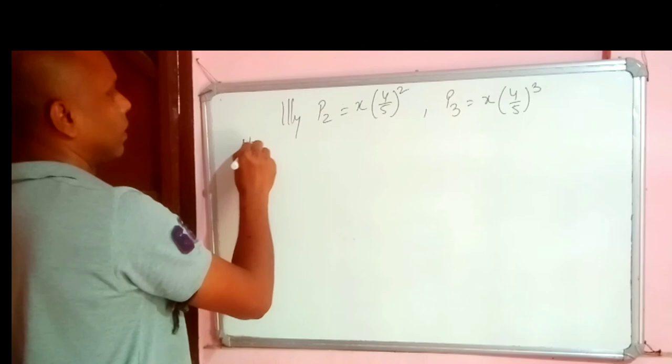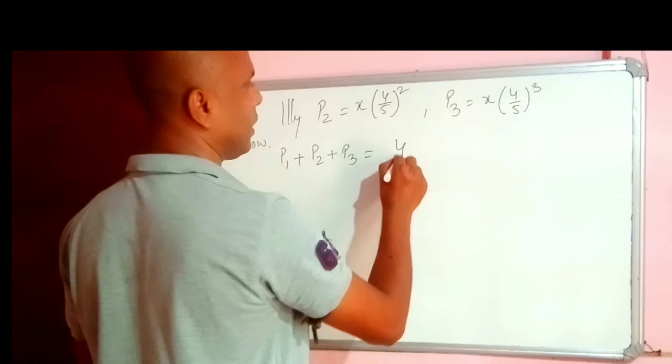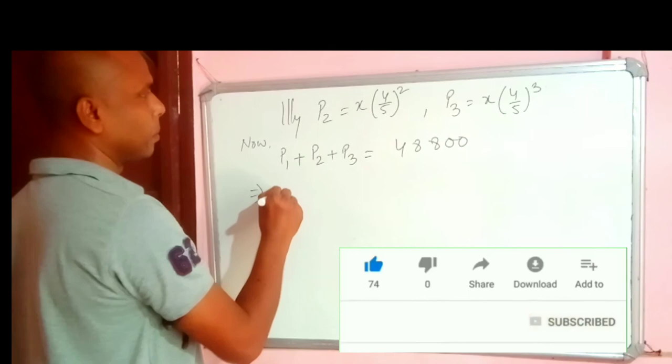Now, the sum of P1, P2 and P3 is the balance of 48,800. Let us substitute the value of P1, P2 and P3.